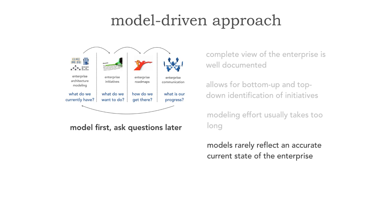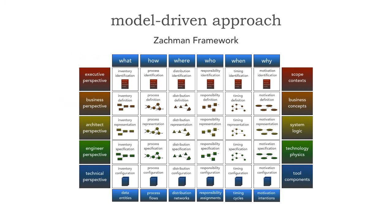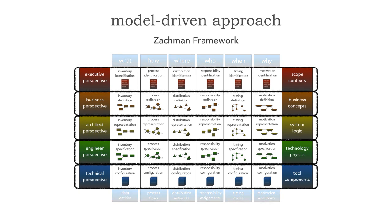Linked with the model-driven approach is where we start to get to the Zachman framework. When we take a look at some of those architectural frameworks, the Zachman framework of enterprise architecture really fits well with this model-driven approach. When we take a look at the Zachman model, what we're really doing is focusing on modeling the enterprise. There's not much here about how to do things, but we have fairly complete models. Within the grids in Zachman, horizontally he has perspectives — starting from the technical perspective, moving up to the engineering perspective, the architect perspective, then up to the business, and all the way up to the executive perspective.